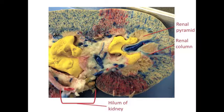Also shown here is the hilum of the kidney, which is the site where the renal artery enters the kidney and the renal vein and the ureter exit the kidney.